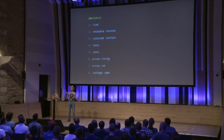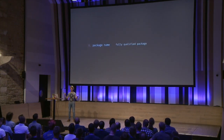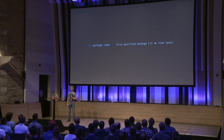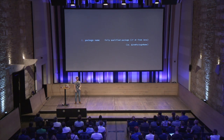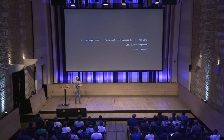Let's go from the bottom up. Package name — it's a fully qualified package name. You might wonder why you need that, because it can be different from Java. There is an annotation called JVM package name — you can put it on a Kotlin file so the Kotlin package will differ from the Java package. There's no way to gather that from the bytecode. Interesting fact: you cannot put it in a file that has classes; it has to be top-level constructs like functions, objects, constants, and things like that.